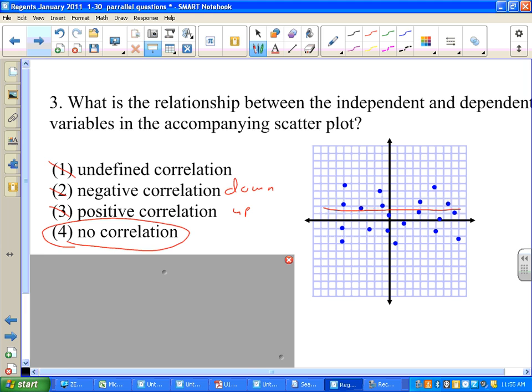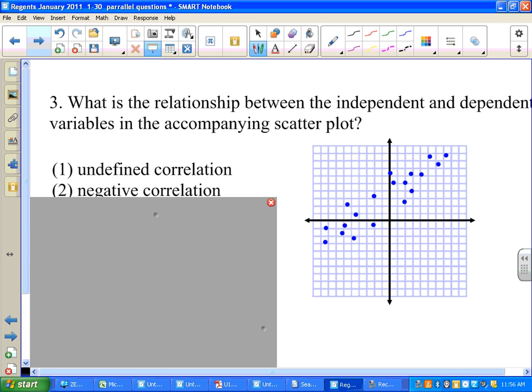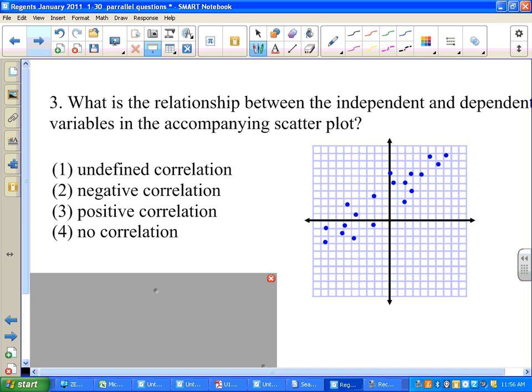The last question, like number three. What's the relationship between this independent and dependent variable in the accompanying scatter plot? You try to answer this question. I'll give you a few moments. It is number three. It's a positive correlation.